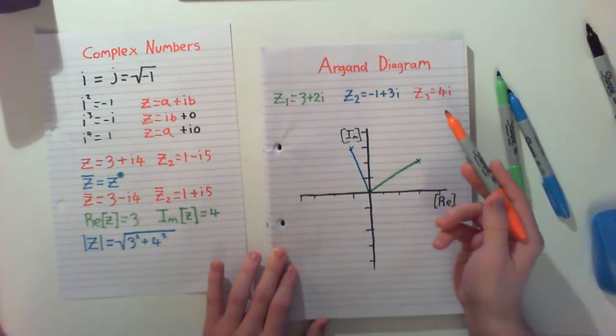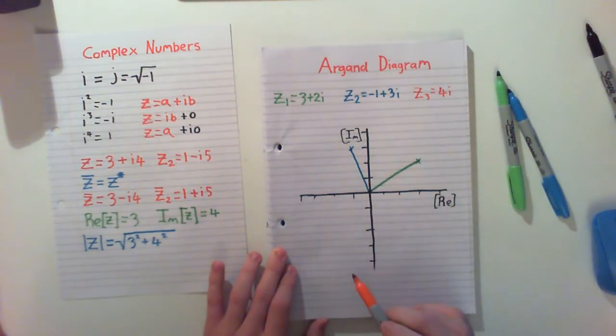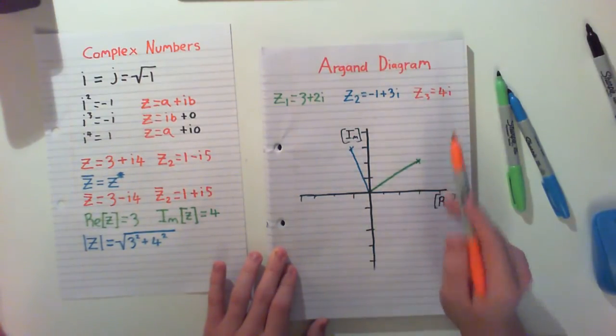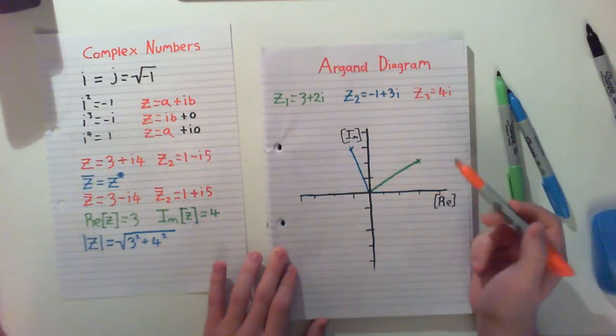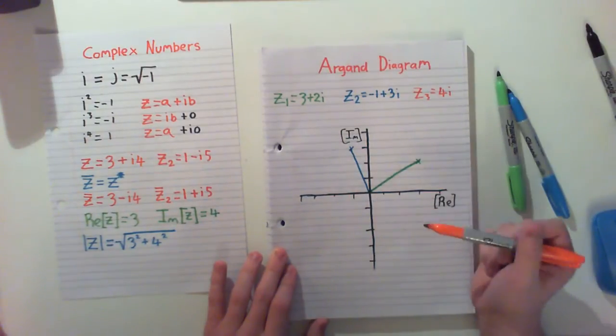And finally, we just have 4i. We have no X component, we have no real component.